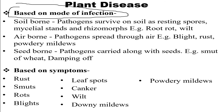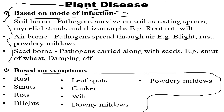There can be other types beyond these three, but soilborne, airborne, and seedborne are the most common. Based on symptoms, diseases are classified as rust, smut, blight, leaf spot, canker, wilt, downy mildew, and powdery mildew — these are the names of diseases classified based on their symptoms.